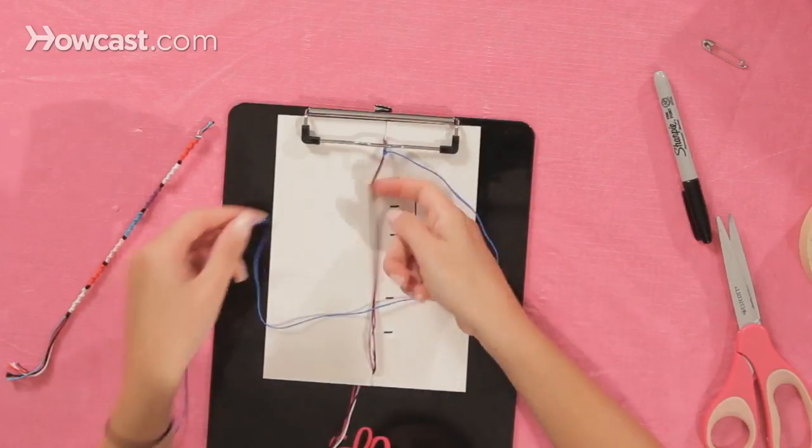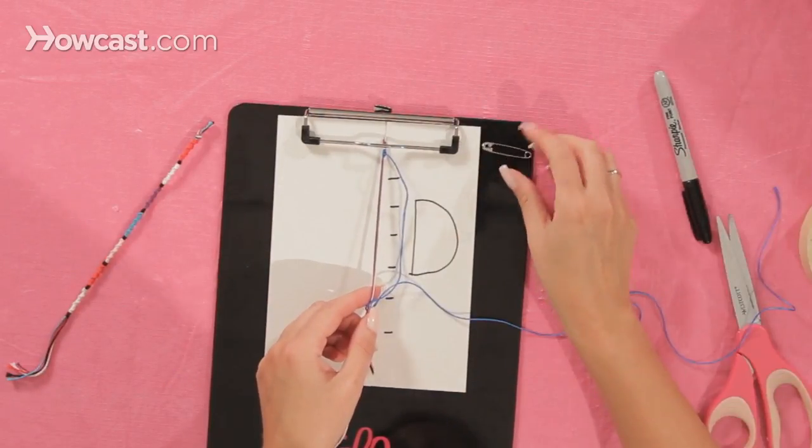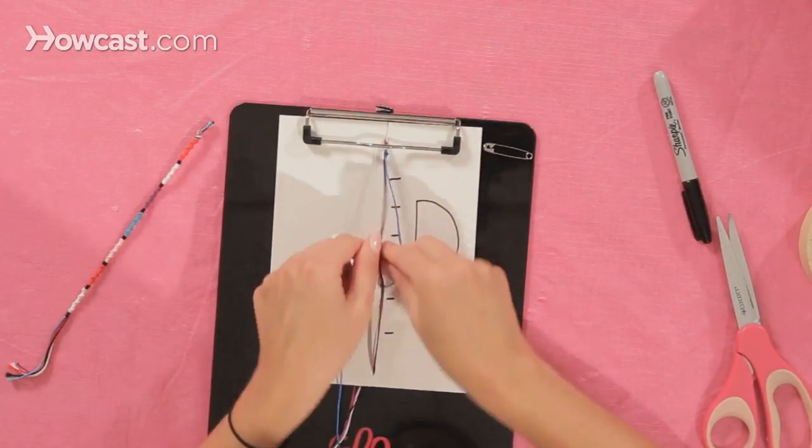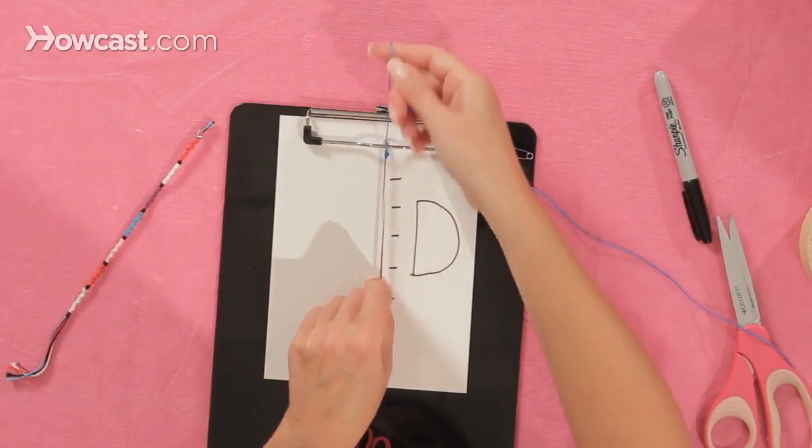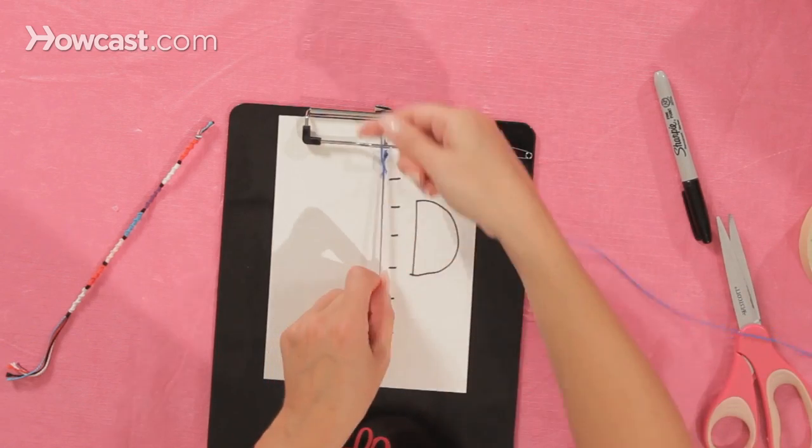When you're making this bracelet, it's easy to get a knot sometimes, but you can just take a paper safety pin and you can pick the knot out and start over. So don't think that you have to throw the whole thing out and start. Just use your safety pin and get your knot out.